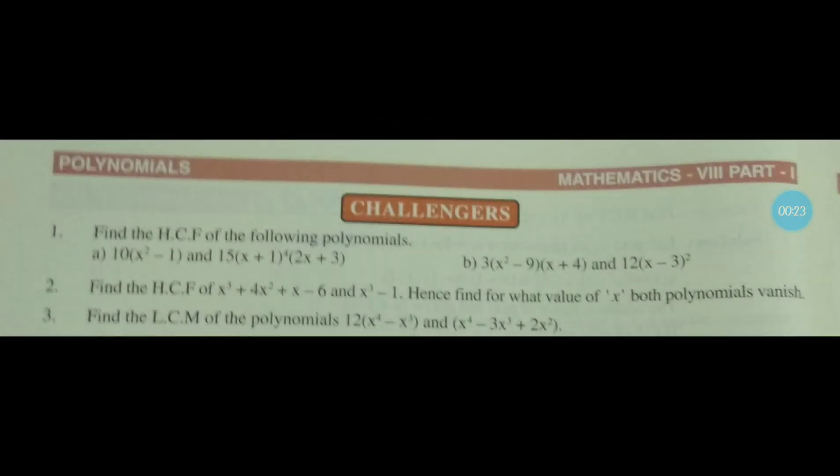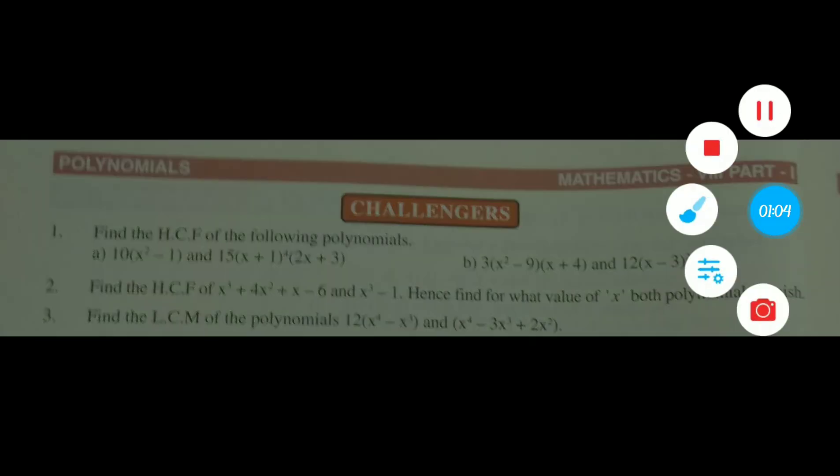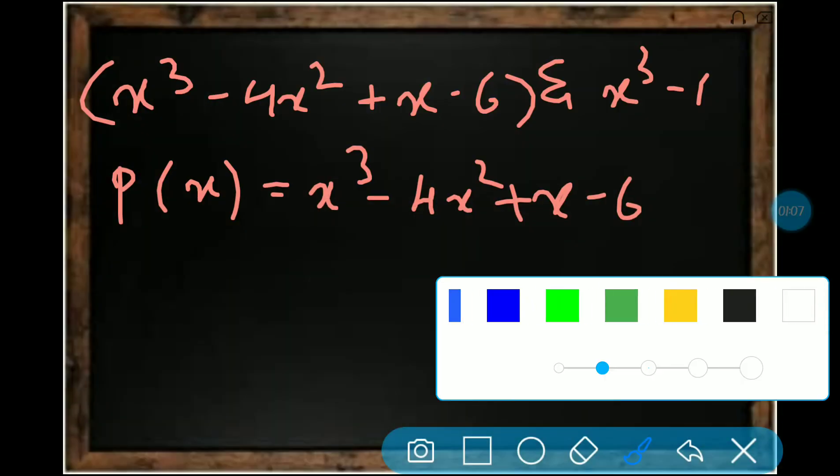The second question says find the HCF of x³ + 4x² + x - 6 and x³ - 1. Hence find the value for x where both polynomials vanish. One polynomial is given and we have to find the value of x where both polynomials will get vanished. It's a lengthy problem, so you should be capturing screenshots.